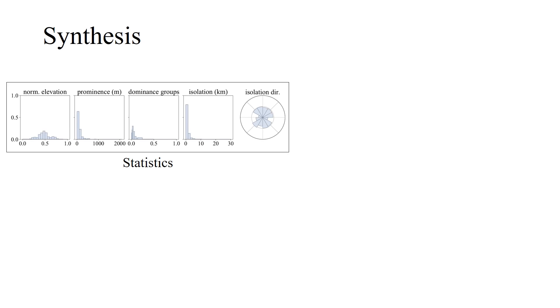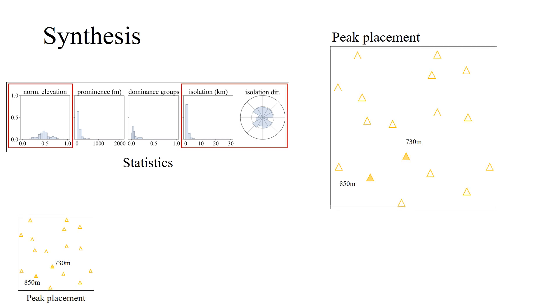Our terrain synthesis is organized into six steps. First, we generate peaks according to the orometry and elevation histogram.